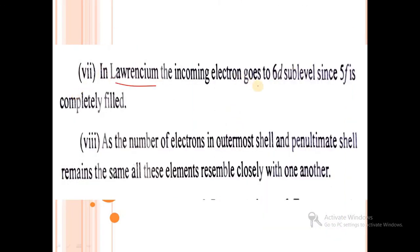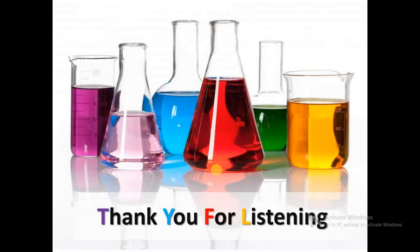In lawrencium, the incoming electron goes to the 6d sub-level since 5f is completely filled, 5f14. As the number of electrons in the outermost shell and penultimate shell remains the same, all these elements resemble closely with one another, having the same physical and chemical properties, like lanthanides. This is about the electronic configuration of actinides. Thank you for listening to this video.